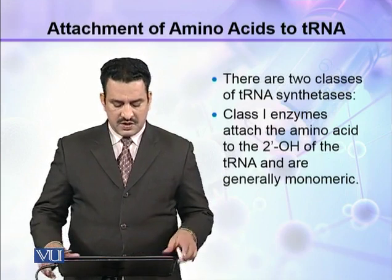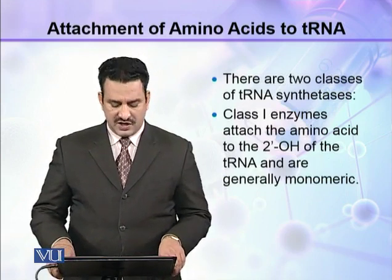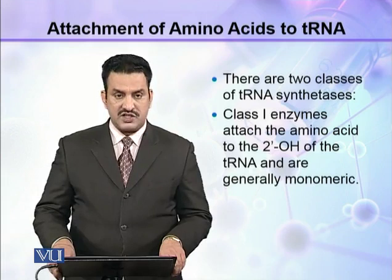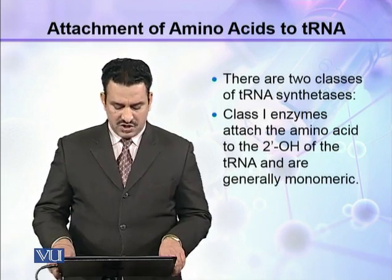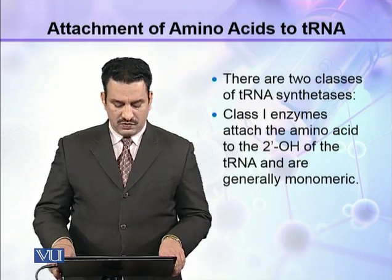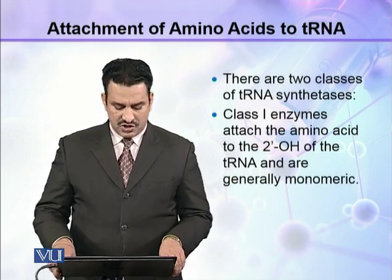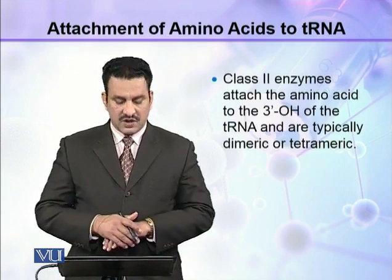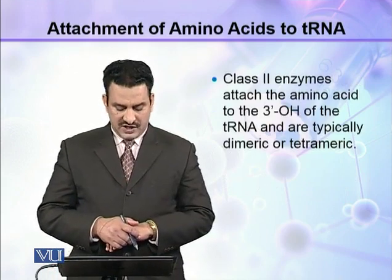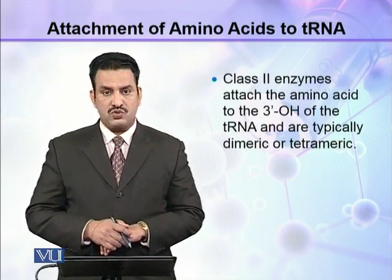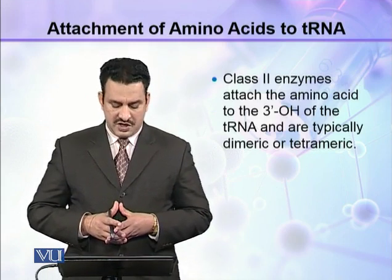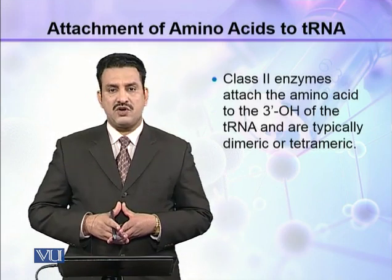There are two classes of tRNA synthetases. Class I enzymes attach the amino acid to the 2' OH end of the tRNA and are generally monomeric. Class II enzymes attach the amino acid to the 3' OH of the tRNA and are typically dimeric or tetrameric.